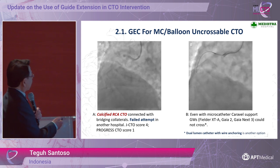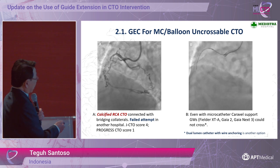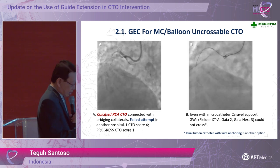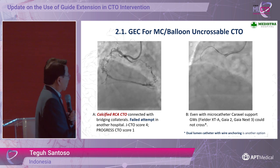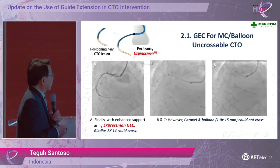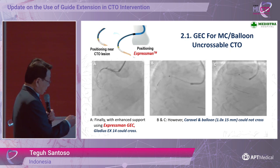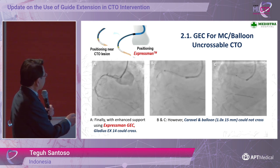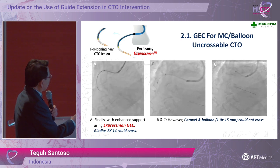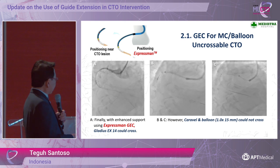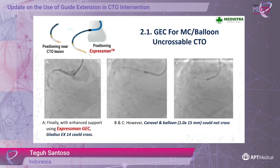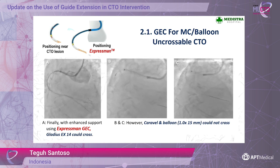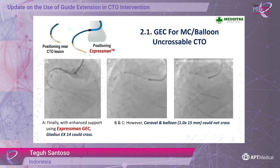There is a small side branch, so another option would be to use a dual-lumen catheter with wire anchoring. But in this case I tried to use Expressman, positioning the guide extension catheter close to the CTO body. Finally, with this enhanced support, Gladius X14 could cross — a wire I find very useful for antegrade approach, especially in long CTOs.